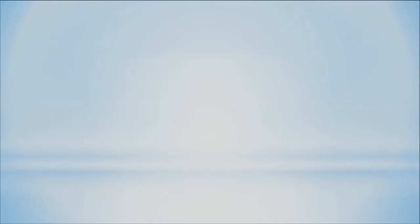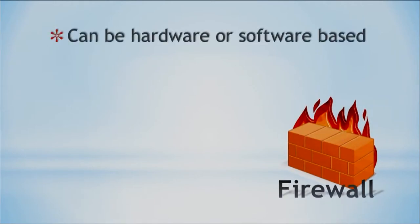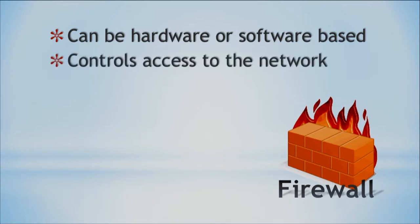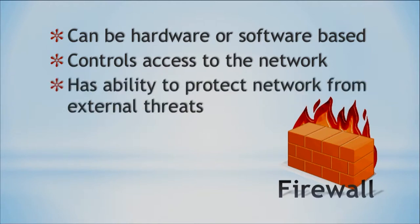The first device we can use is a firewall. Firewalls can be hardware or software-based. They can be a physical device on your network — a hardware firewall — or a piece of software running on your desktop computer, which would be a software-based firewall. What firewalls do is control access to the network — they can either block or permit access. They also have the ability to protect your network from external threats, so they're smart devices that help protect our resources and networks.